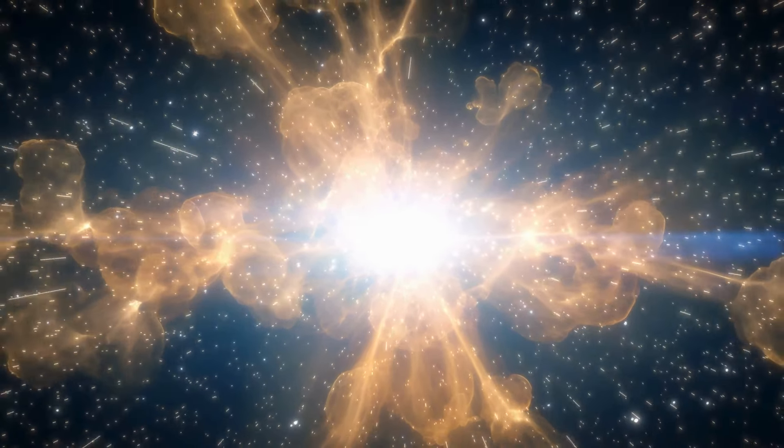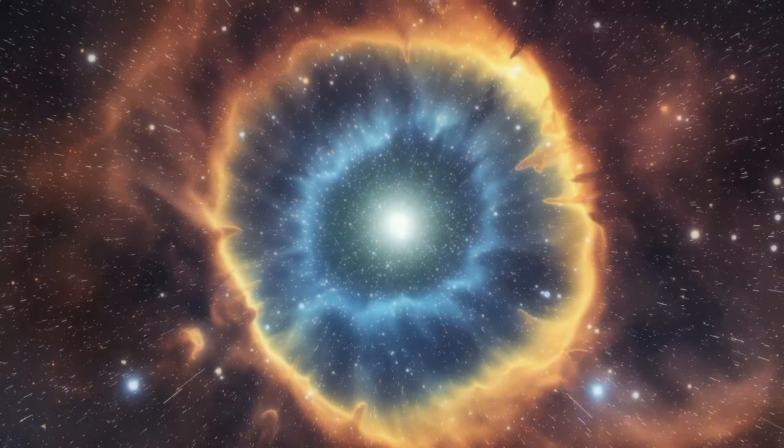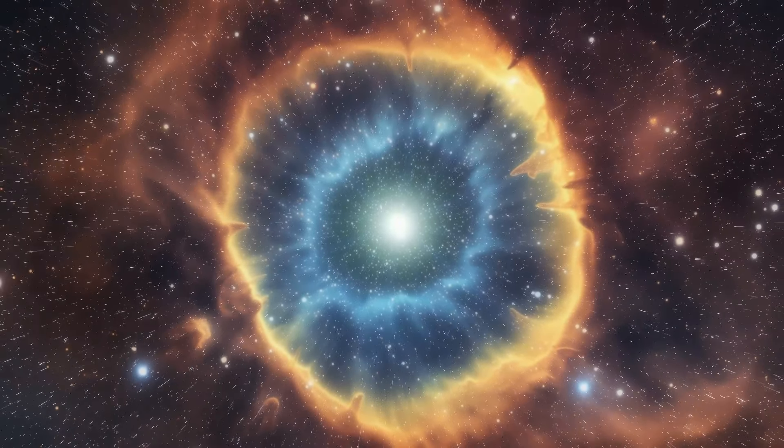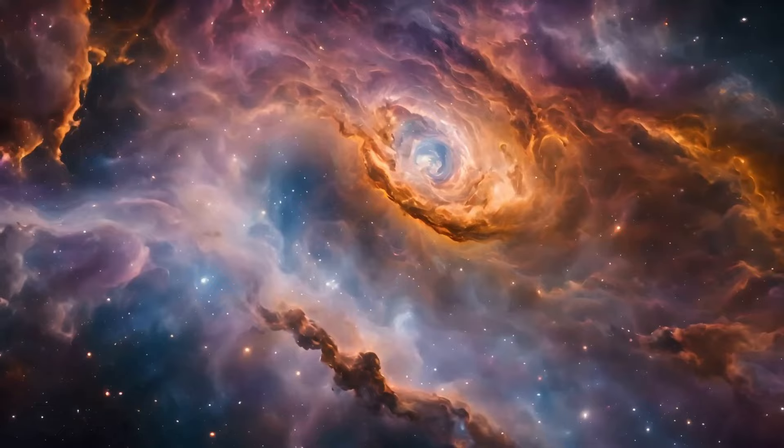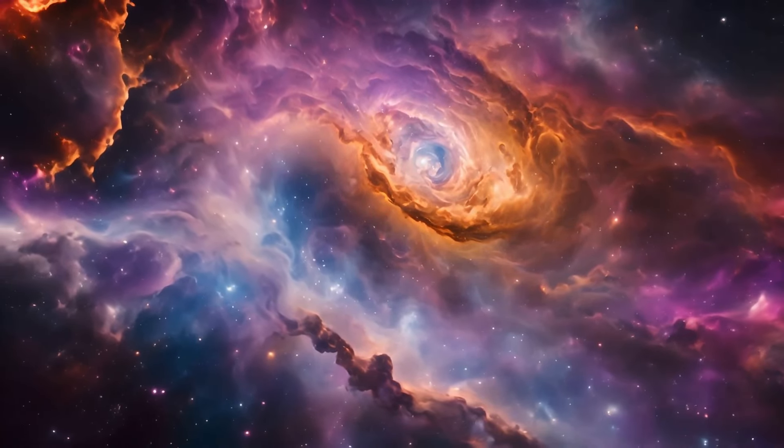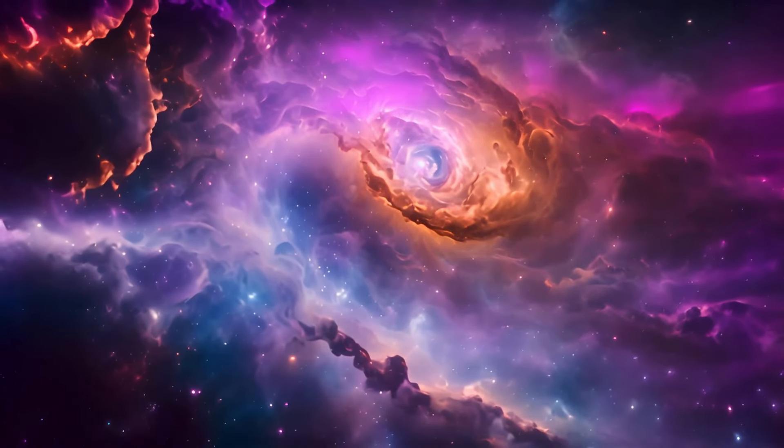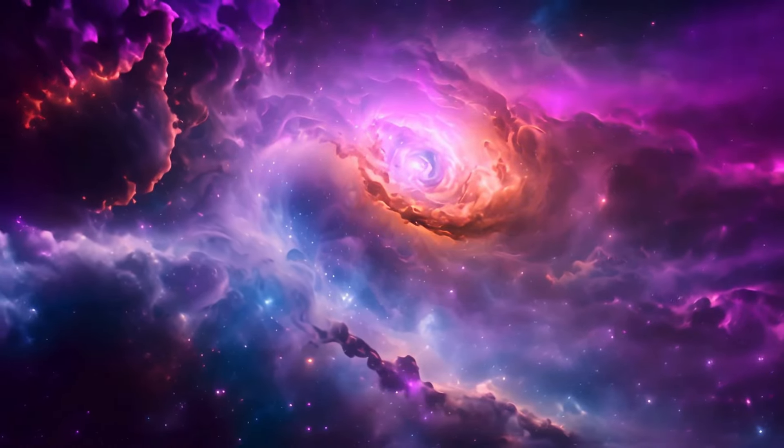When Betelgeuse detonates, it will emit a wide range of radiation, from visible light to gamma rays. One of the most critical aspects of the supernova will be the surge of neutrinos, elusive subatomic particles that rarely interact with matter.